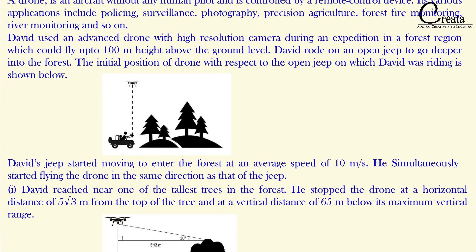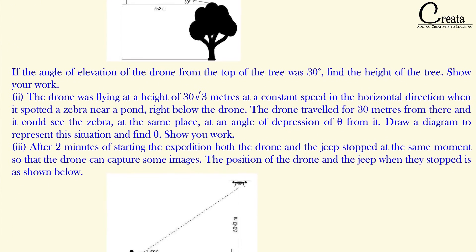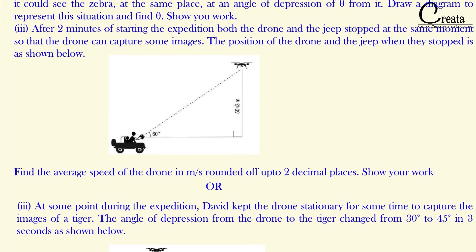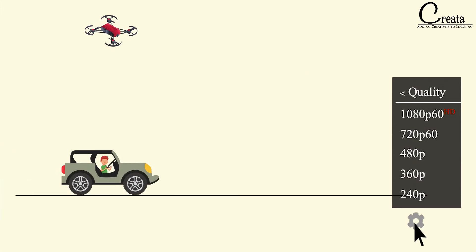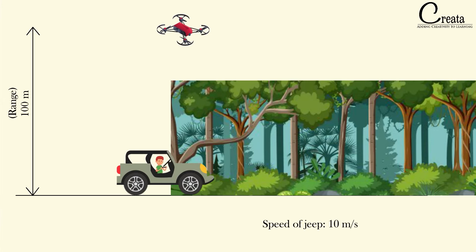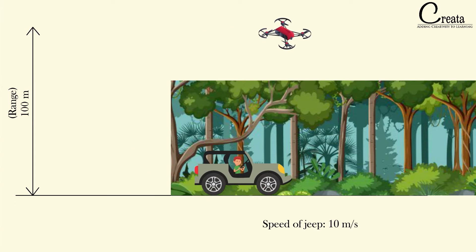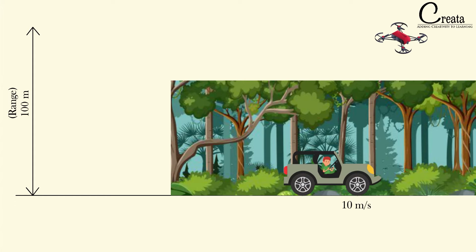Let's move to question number 38. Pause the video and try to solve the question on your own. In this question, a drone is given and David is controlling the drone through his Jeep. The maximum height of the drone is 100 meters. The drone is directly above David's Jeep as he enters the jungle. The speed of the Jeep is given as 10 meters per second, and various trigonometric triangles will be formed.